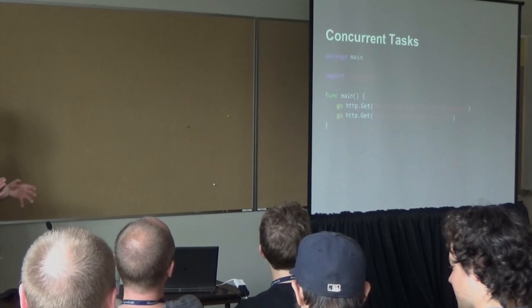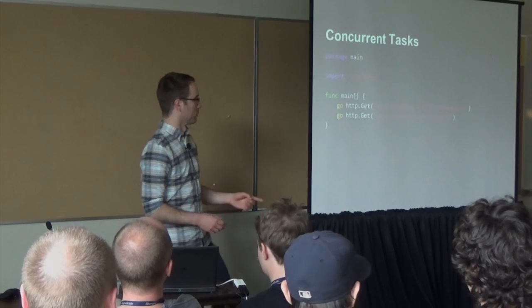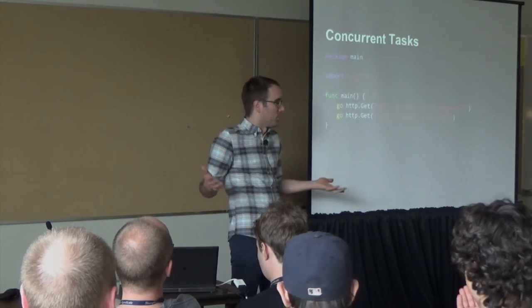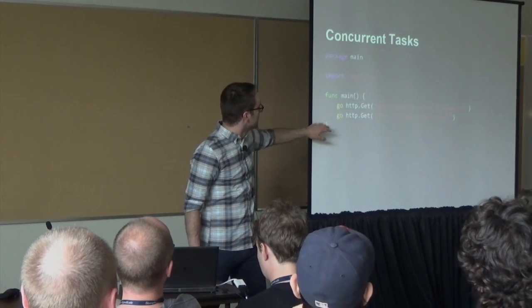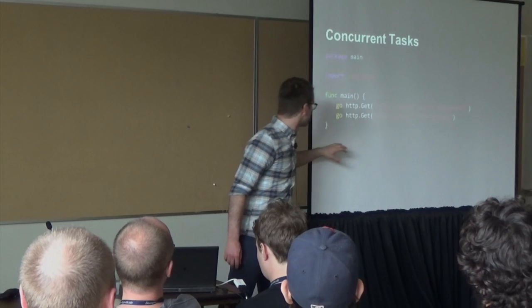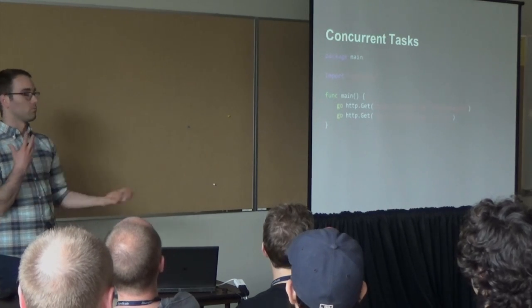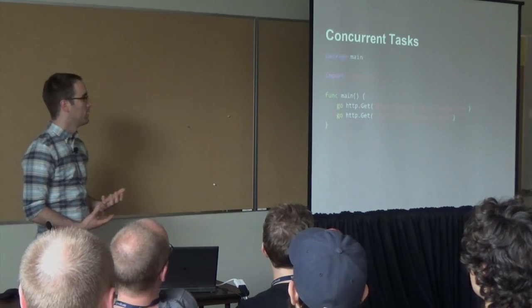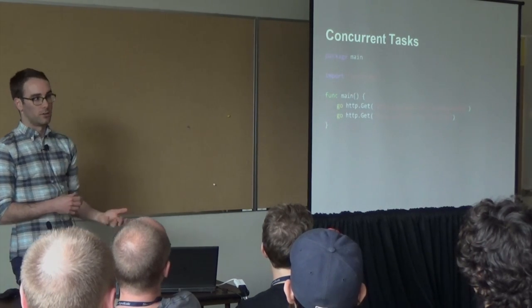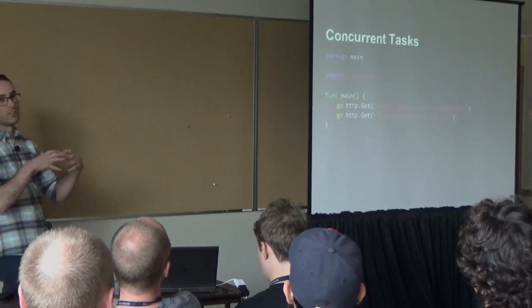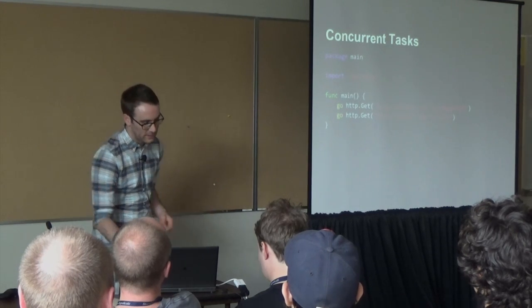If you wanted to write two tasks to run concurrently, I'd cheat and just use a different language — Go — where you have a little 'go' keyword that just does it all for you. The point being that these two tasks are not only independent of one another, but because of this 'go' keyword, they run concurrently, meaning they can execute at the same time or in any order, completely independently of one another.